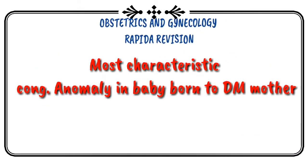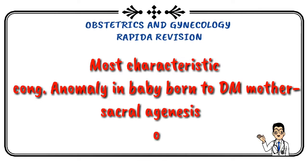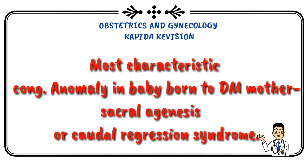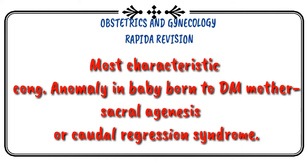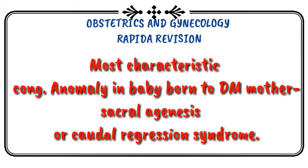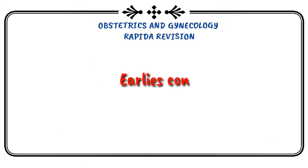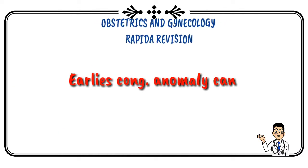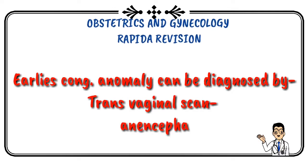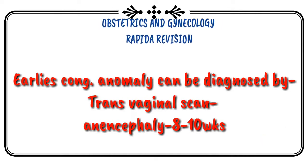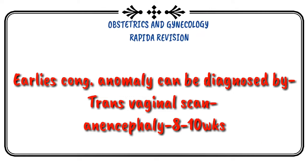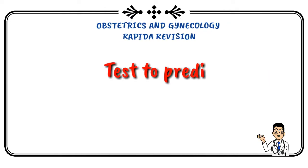Most characteristic congenital anomaly in baby born to a diabetic mother is caudal regression syndrome (sacral agenesis). Earliest congenital anomaly can be diagnosed by transvaginal scan at 8 to 10 weeks.